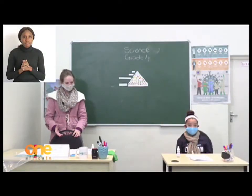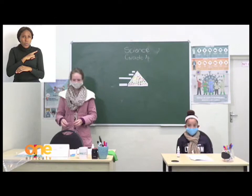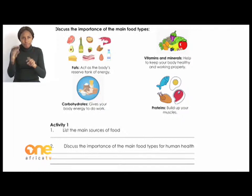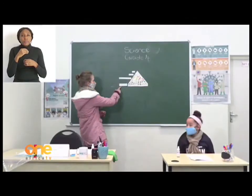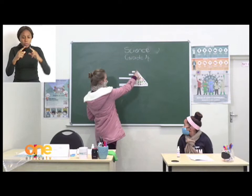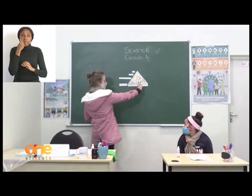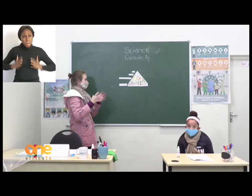The next thing we will talk about is the main food types and how important they are for us. Turn to page 12 in your workbooks. On this picture you can see a triangle with four different food types. At the bottom we have carbohydrates — they fill the biggest space, meaning our bodies need a lot of carbohydrates. Then vitamins and minerals — found in fruits and vegetables — and our bodies still need a lot of those.